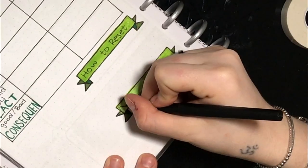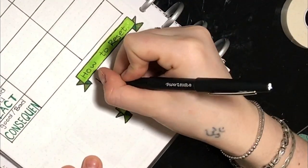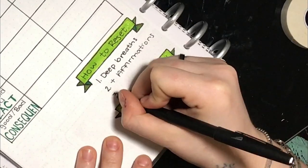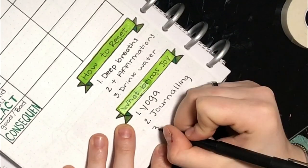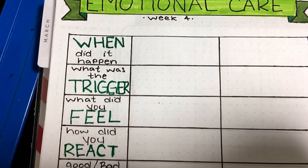Now we're going to talk about how to reset and what brings you joy. The things I use to reset are deep breaths, positive affirmations, and drinking water. The things that bring me joy are yoga, journaling, and petting my cat, but that part got cut off.